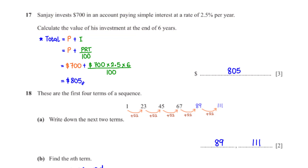These are the first four terms of a sequence. Write down the next two terms. The sequence has a constant difference of 22. Adding 22 to 67 gives 89, and adding 22 to 89 gives 111.